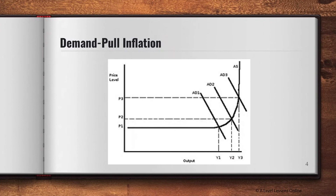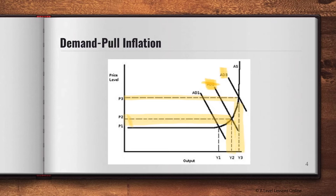Looking at the diagram for demand-pull inflation: when AD shifts from AD2 to AD3, closer to full employment, national income is at Y2 and price level is at P2. When AD increases from AD2 to AD3 — due to an increase in any AD factor such as C, I, G, or net exports — it causes the price level to rise to P3 with only a smaller rise in national output. This increase in general price level from P2 to P3 is what we call demand-pull inflation. National output can still increase, but to a much smaller extent compared to the rise in price level.